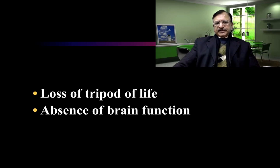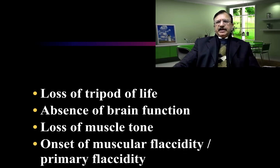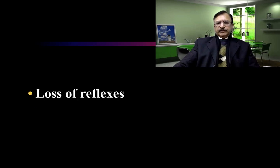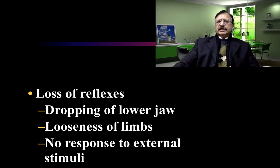Absence of brain function, that is loss of CNS function, leads to loss of muscle tone due to loss of innervation. Reflexes are lost and this is primary flaccidity. Muscles become flaccid, and this primary flaccidity is due to cessation of central nervous system functions. Reflexes are also lost, drooping of the lower jaw, looseness of the limbs, and no response to external stimuli.